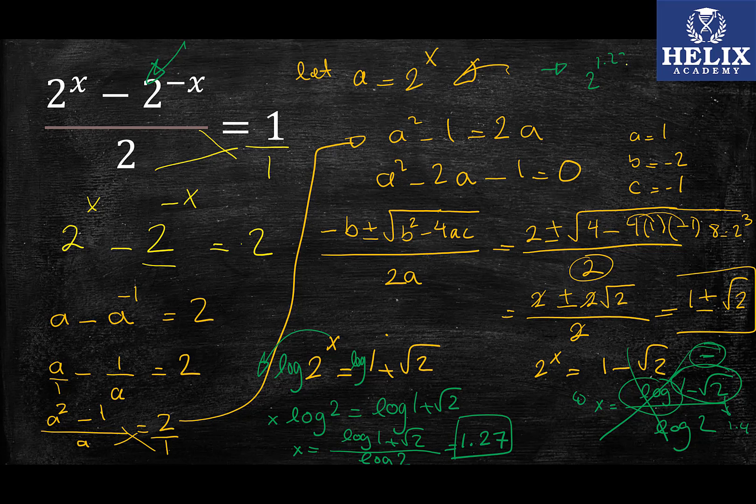So I can check that for you here. Here, 2^1.27 - 2^(-1.27) over 2. That should equal 1. It's actually going to give you 0.99, which is going to be rounded up to 1. Perfect. There you have it.